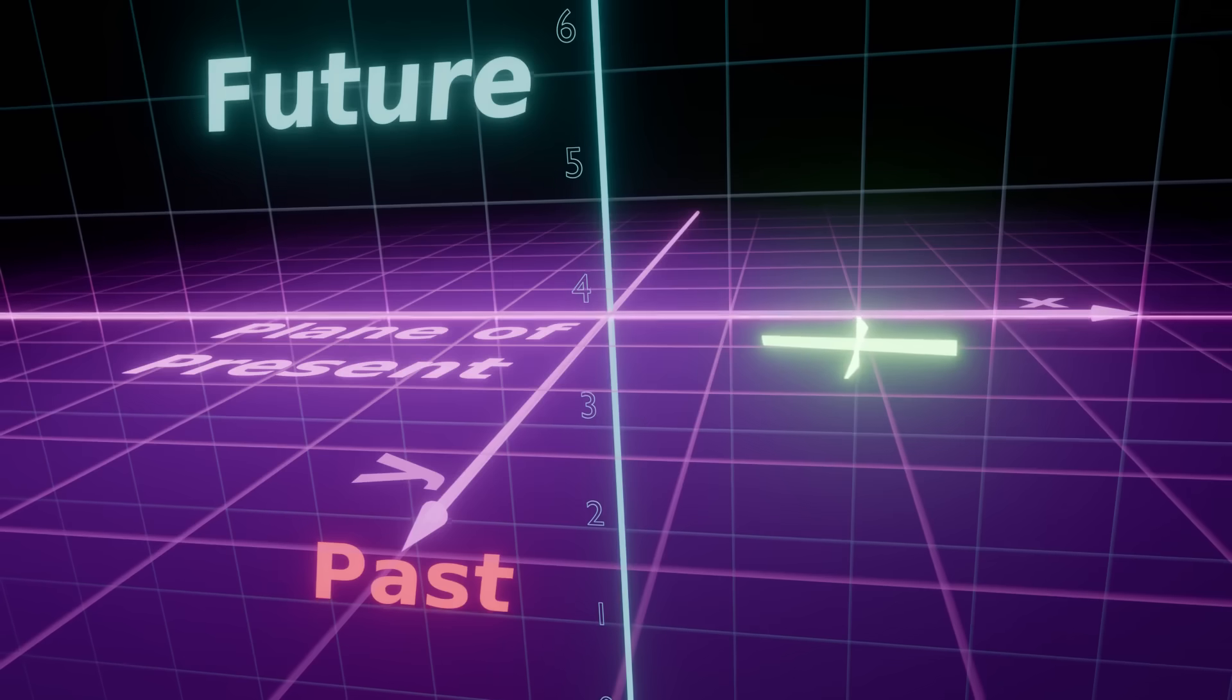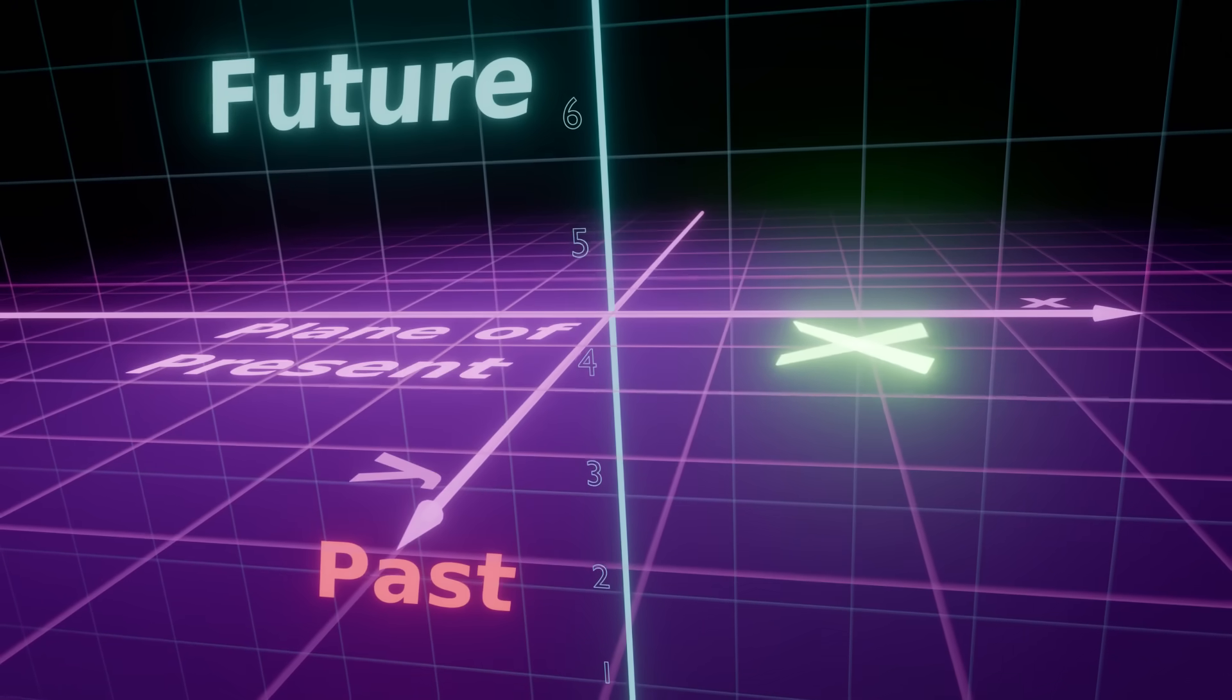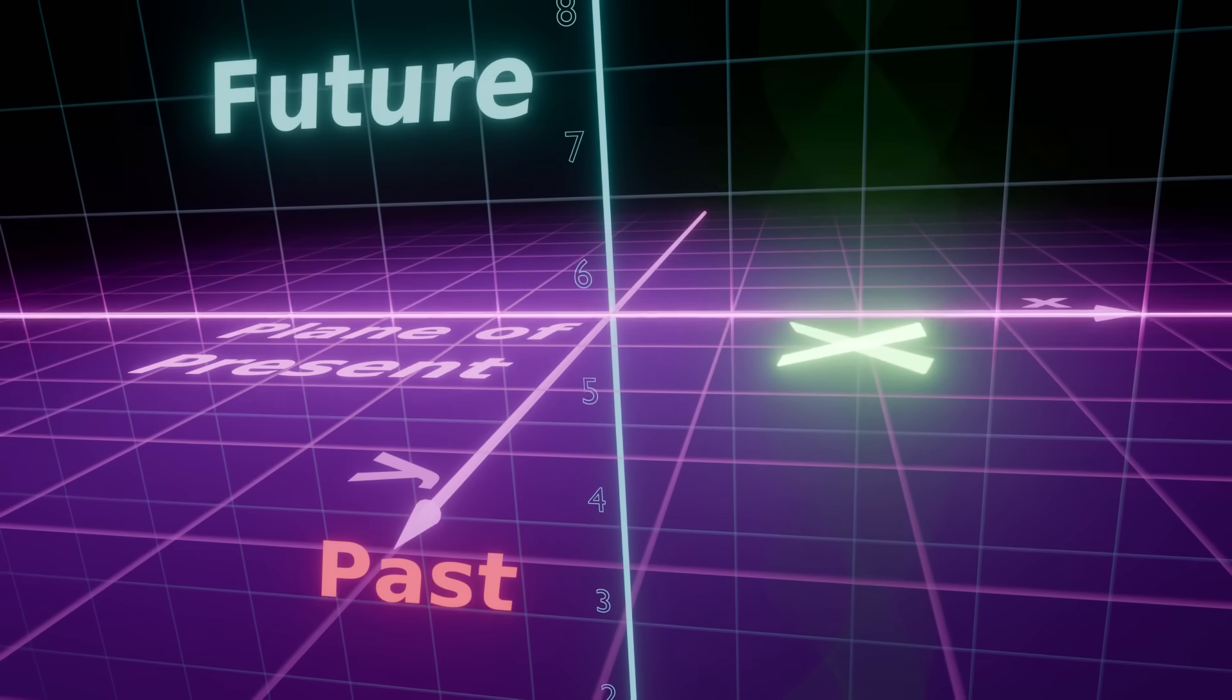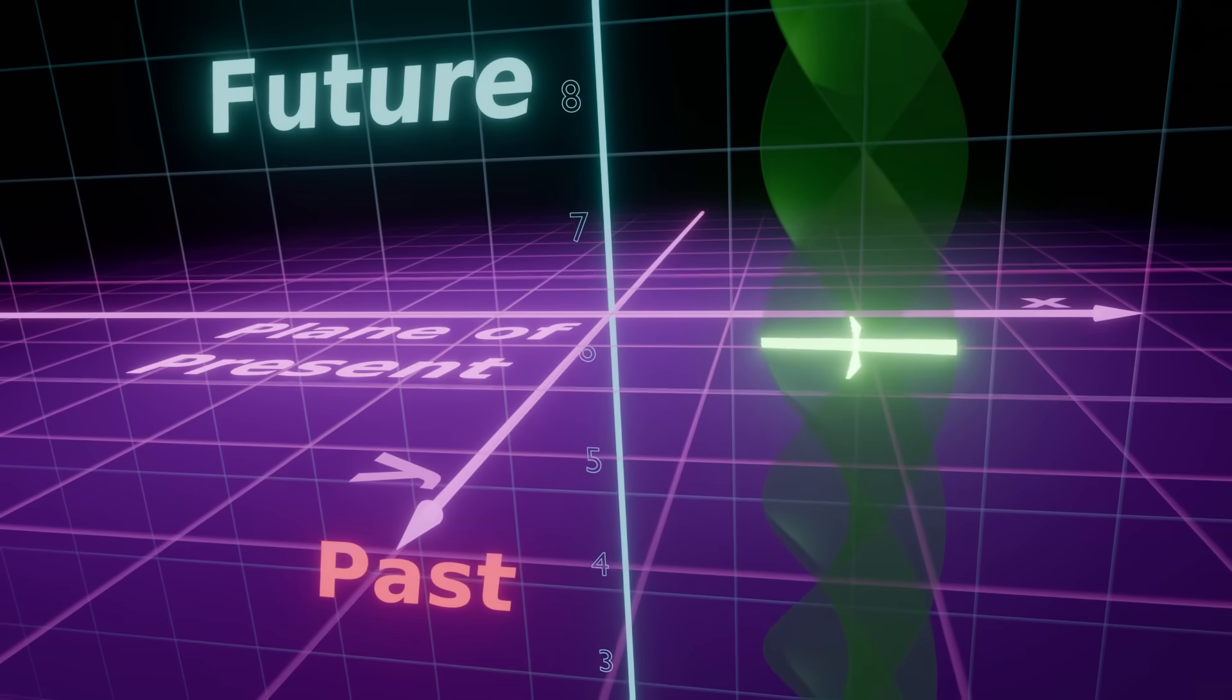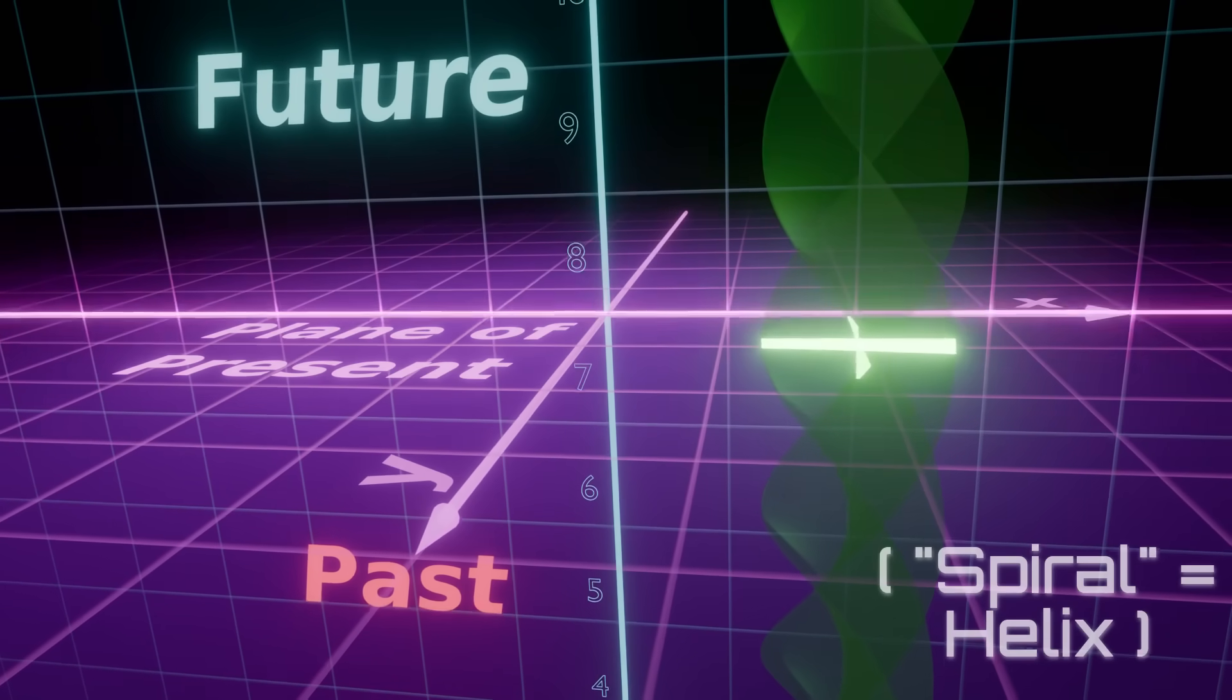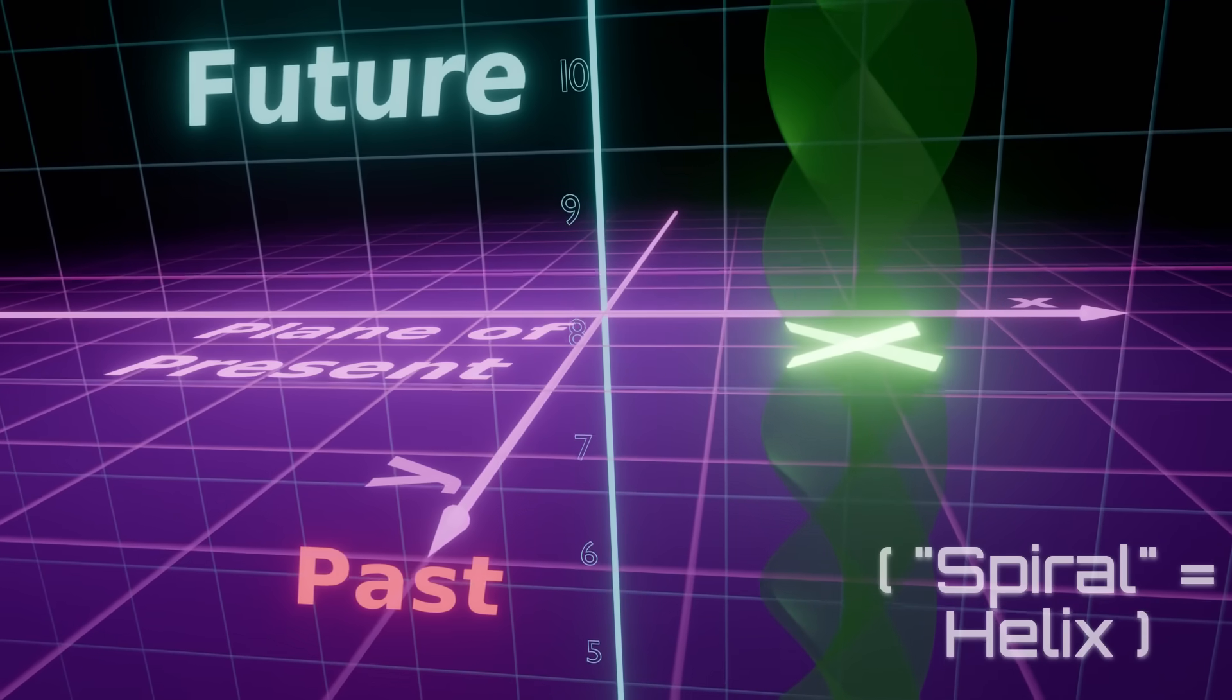Now in this view, all 2D objects with their pasts and futures become 3D shapes in space-time. The rotating cross turns into a spiral. Isn't it beautiful?